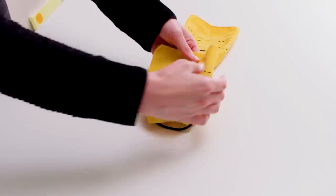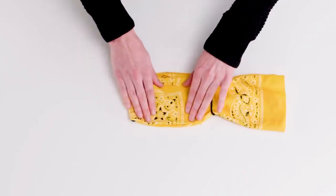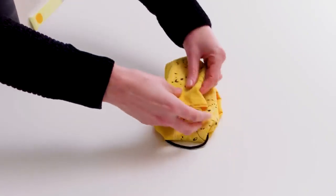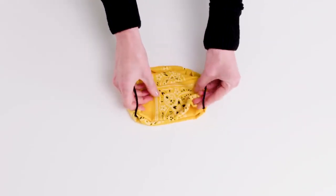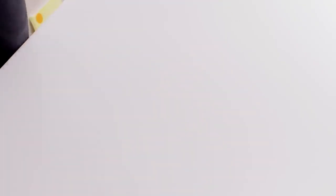Now fold the outer edges of the cloth in, layering on top of each other. Pick up the bands on either side and wrap the bands around your ears.